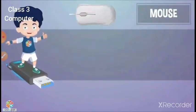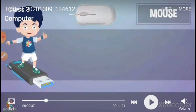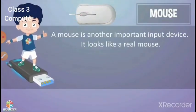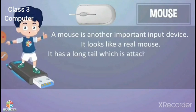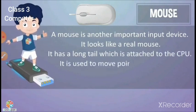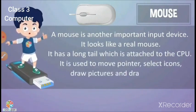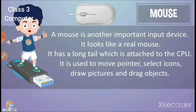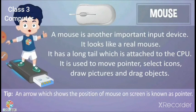A mouse is another important input device. It looks like a real mouse and has a long tail which is attached to the CPU. It is used to move the pointer, select icons, draw pictures, and drag objects.